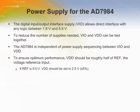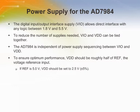The AD7984 uses two power supply pins: a core supply, VDD, and a digital input-output interface supply, VIO. VIO allows direct interface with any logic between 1.8 volts and 5.5 volts. To reduce the number of supplies needed, VIO and VDD can be tied together. The AD7984 is independent of power supply sequencing between VIO and VDD, and is very insensitive to power supply variations over a wide frequency range. To ensure optimum performance, VDD should be roughly half of REF; for example, if REF is 5 volts, VDD should be set to 2.5 volts, plus or minus 5%.